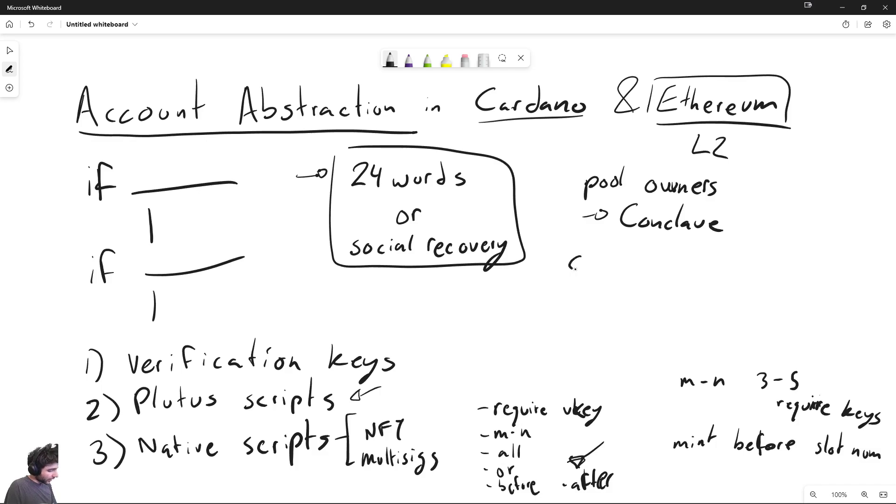There's another one called collateral inputs. So if you've ever used a Cardano wallet, you might have realized that you cannot interact with smart contracts until you set your collateral. This is a requirement of Plutus contracts on Cardano. The reason why is because contracts in Cardano are deterministic, they should never fail. But even though they're deterministic and should never fail, somebody could purposely submit a transaction with a contract that fails. And so whenever that happens,